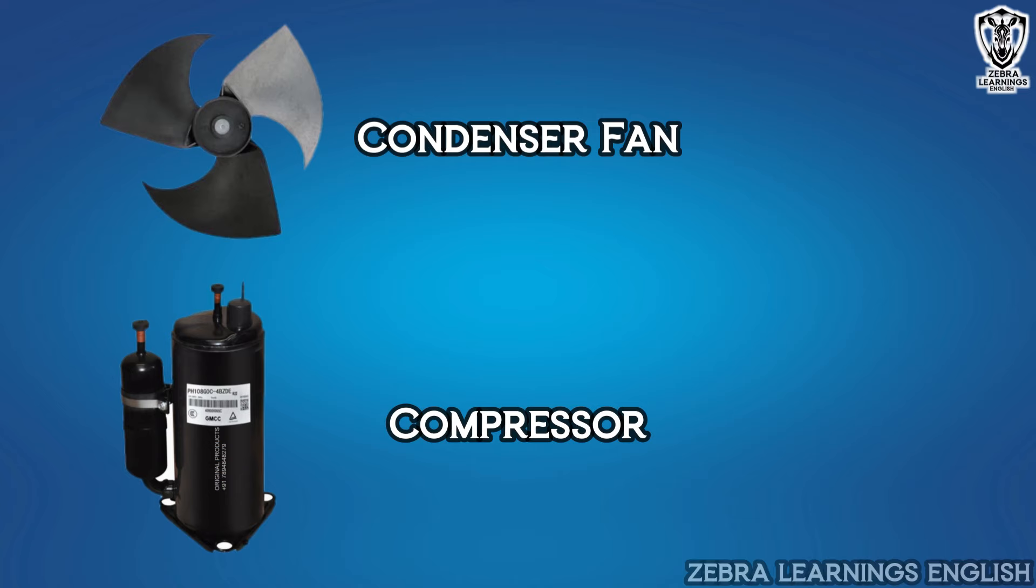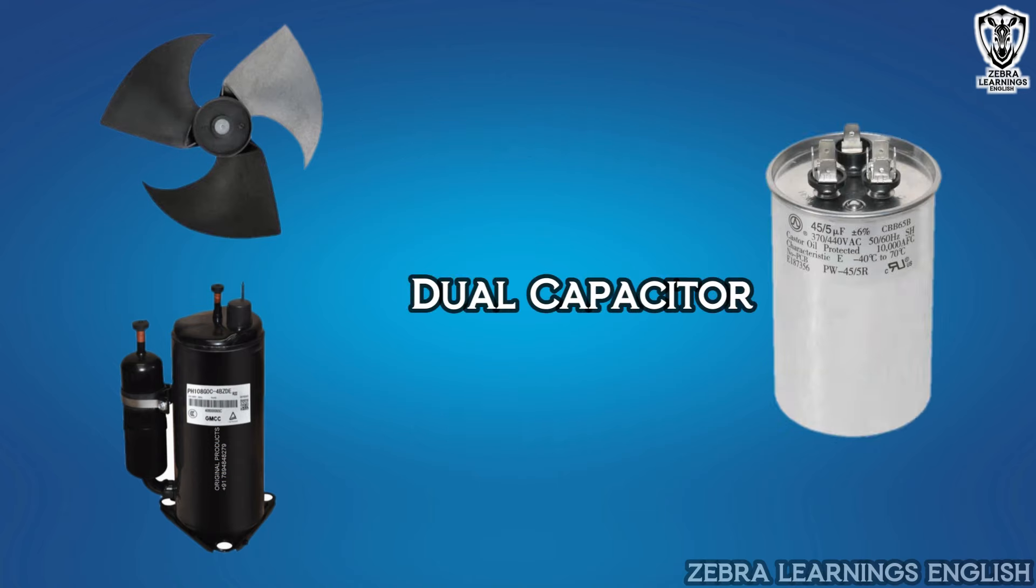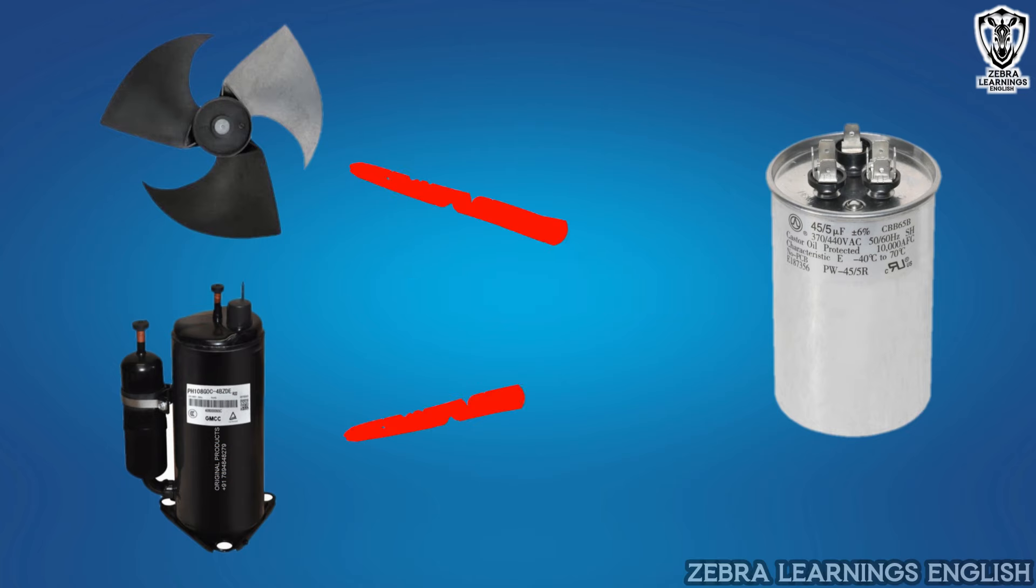Dual capacitors are used in most recent AC units. A dual capacitor means that the same capacitor is used for both components. Dual capacitor has three terminals: common terminal, fan terminal, and herm terminal.